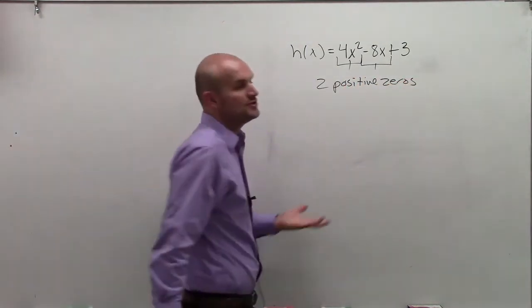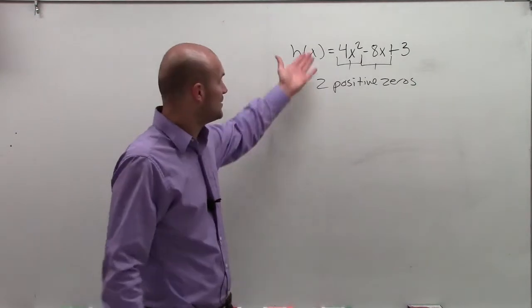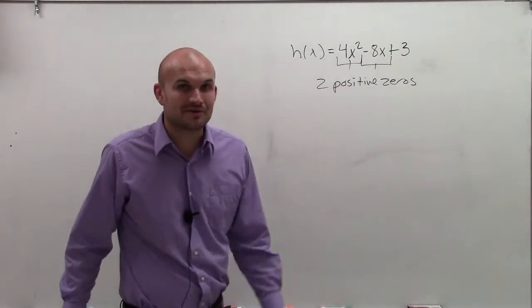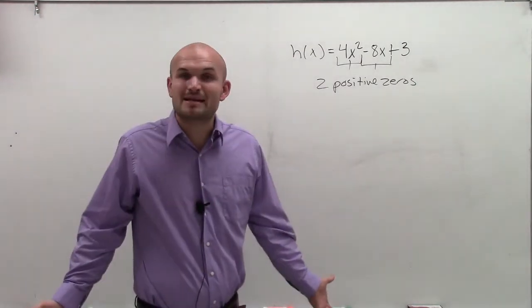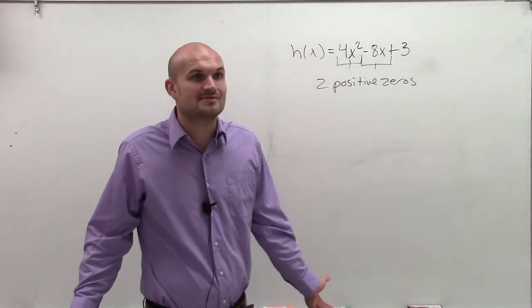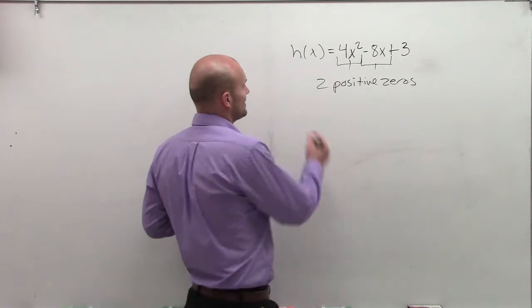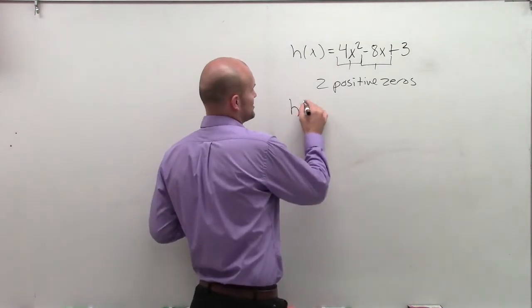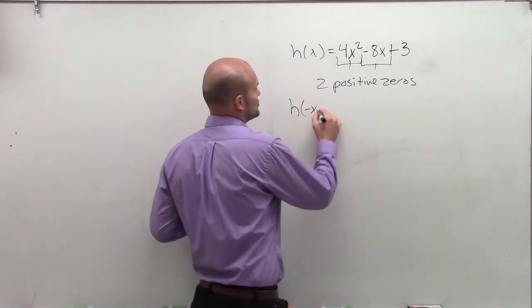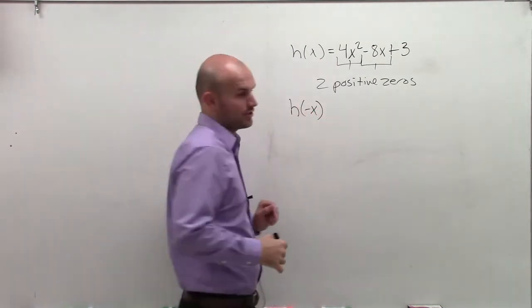So if I have two positive zeros and I'm only allowed to have two zeros, is it possible for me to have any negative zeros? No. But let's work it out so I can show you how it works.